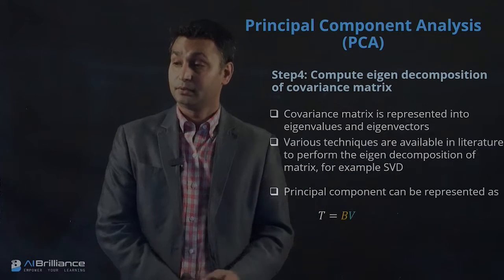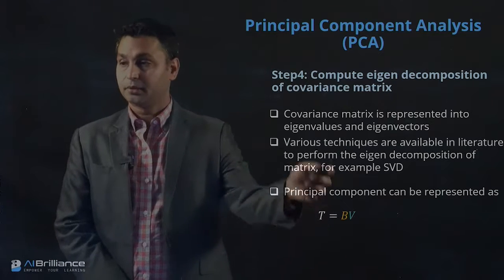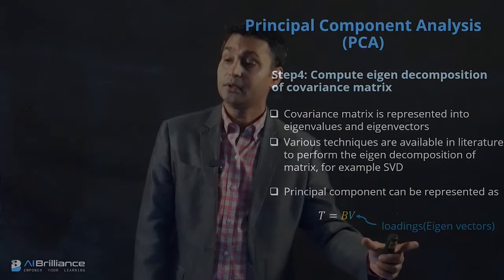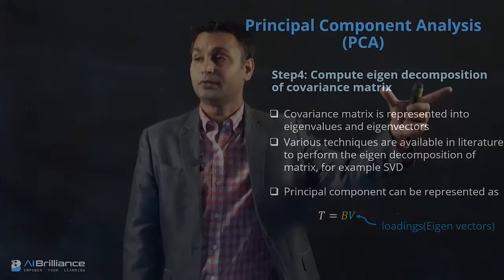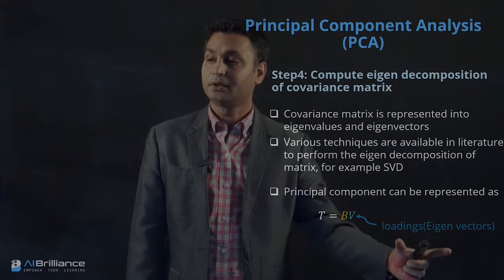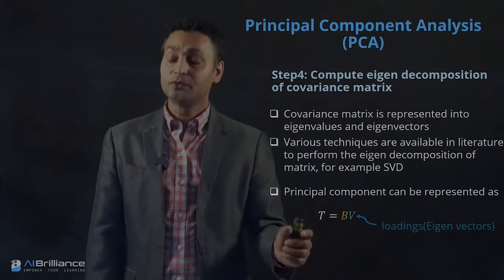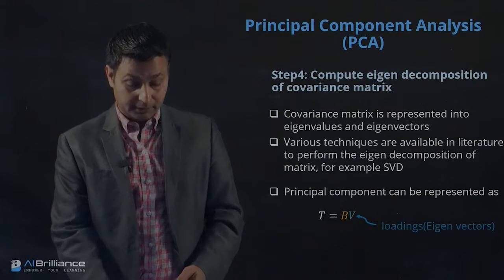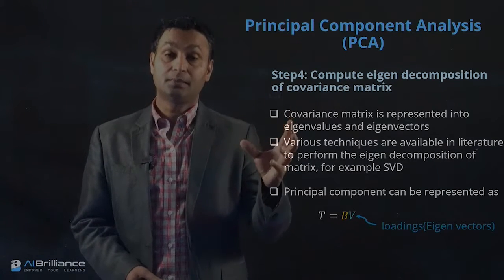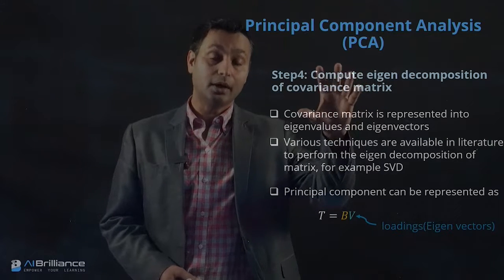The principal component matrix T is represented as X times V, where V are the eigenvectors obtained from solving the eigenvalue problem for the covariance matrix C. Once we get the eigenvectors, we multiply them with the data to get the principal component decomposition. This is analogous to the transformation from X1, X2 space to U and V space — T is essentially the transformation matrix that maps from one space to the other.